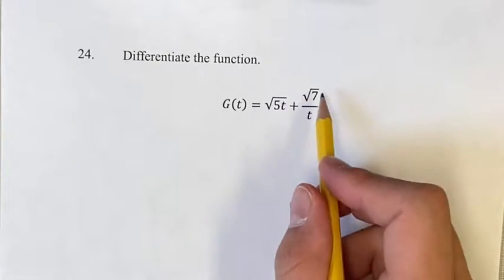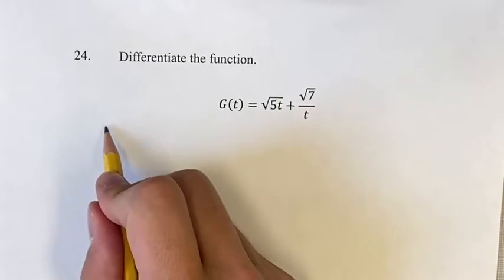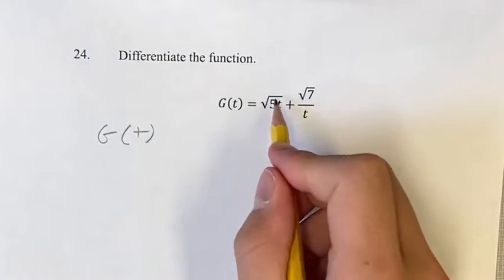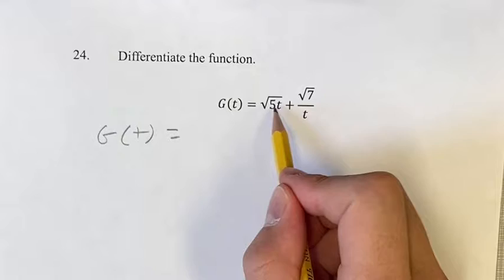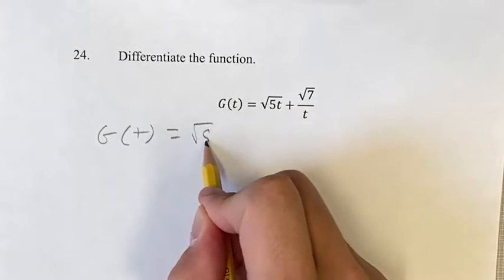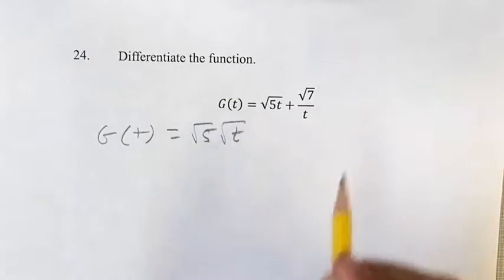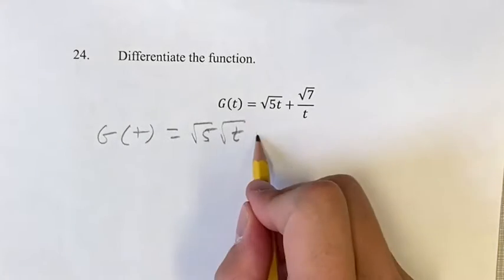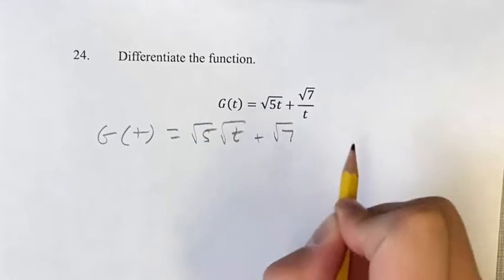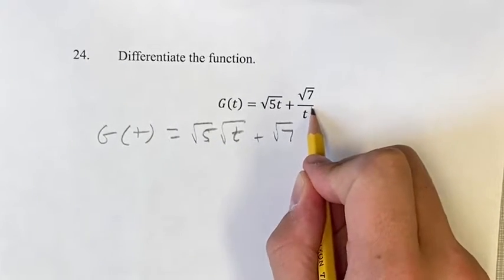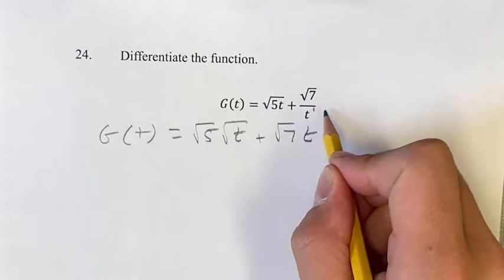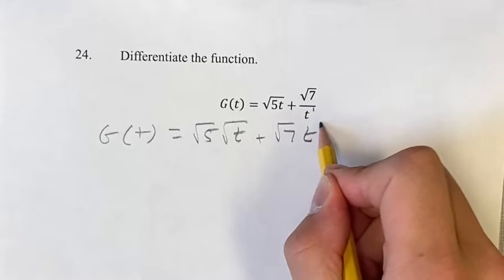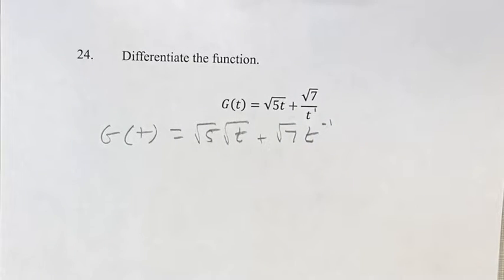We want to get both terms into the form of a power function. Noticing that we can separate the things inside the square root: root 5 times root t, plus the square root of 7, and then t to the 1 in the denominator. When you bring a power function into the numerator, you multiply the exponent by negative 1, so that becomes t to the negative 1.